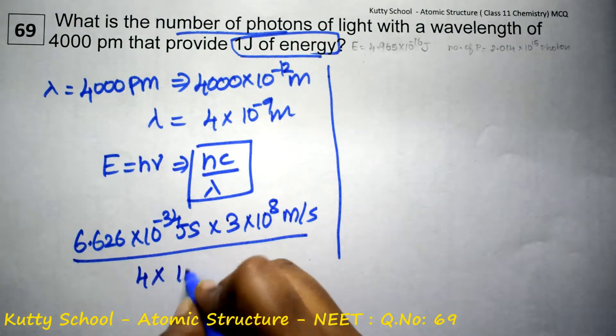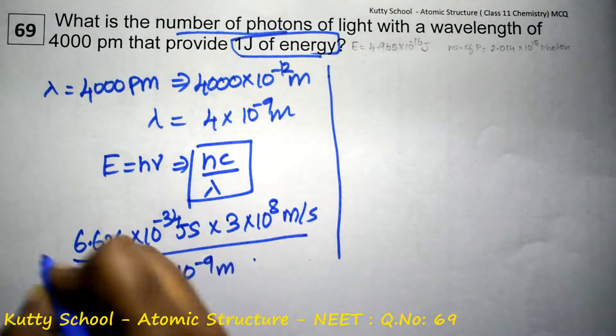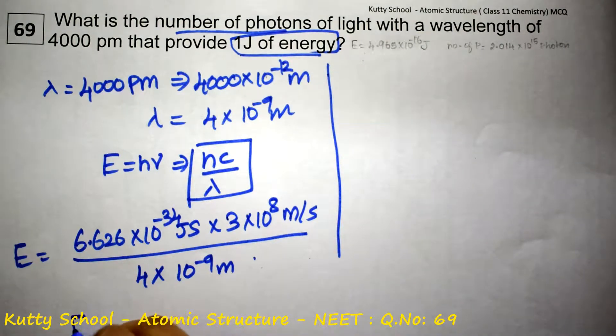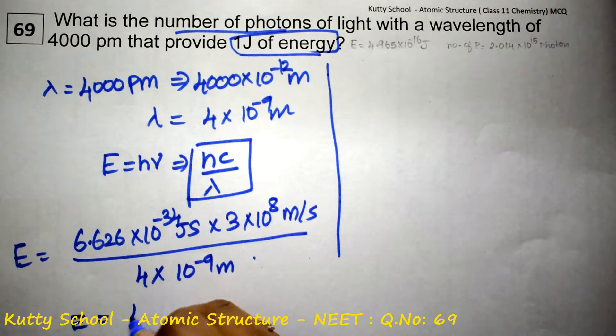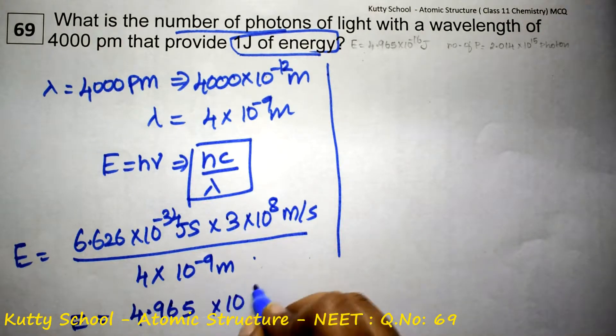Lambda will be 4 into 10 power minus 9 meter. So calculating this, E is equal to energy is equal to 4.965 into 10 power minus 16 joule.